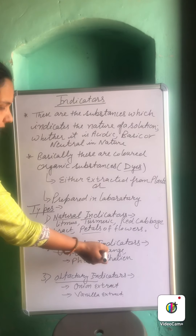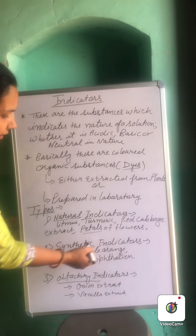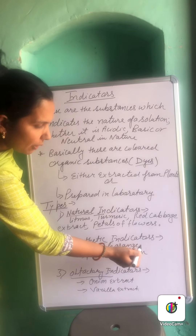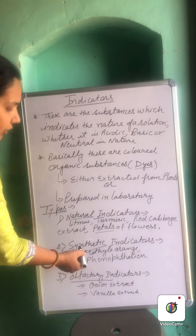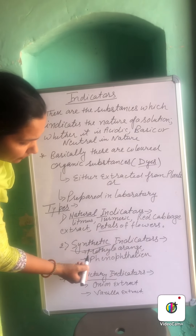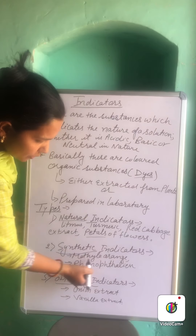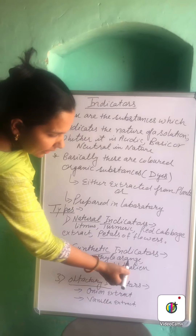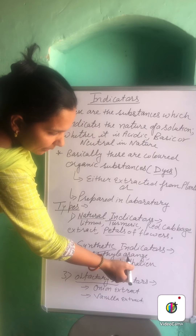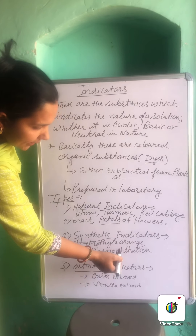The second type are synthetic indicators, because they are prepared in the laboratory with the help of different types of chemicals. These are methyl orange and phenolphthalein. Both these solutions are available in our lab. We have used methyl orange in the practical. These two are the synthetic indicators.